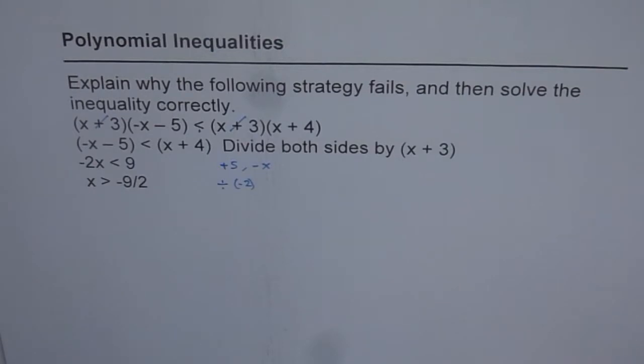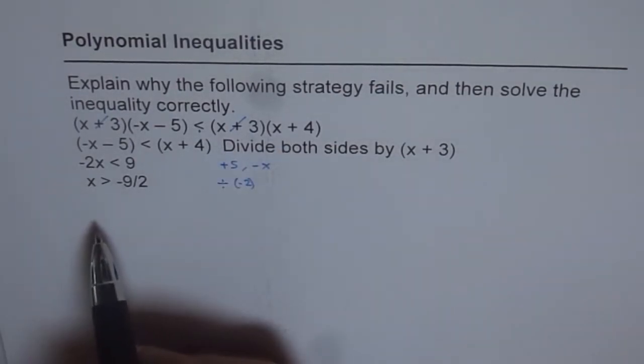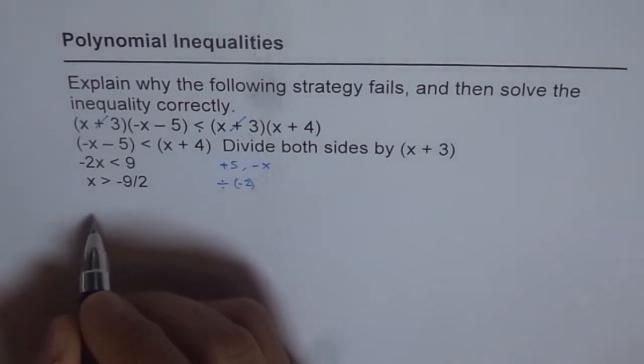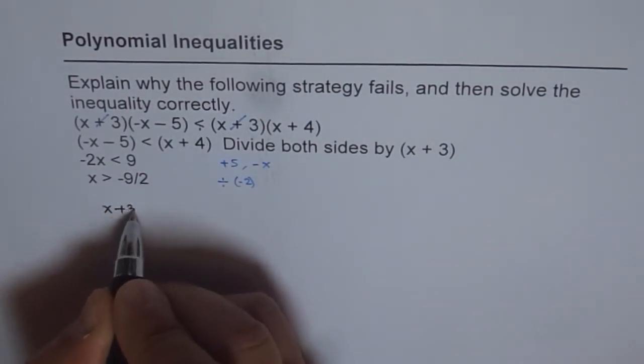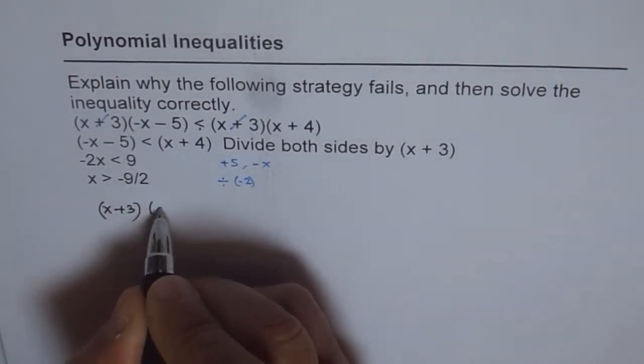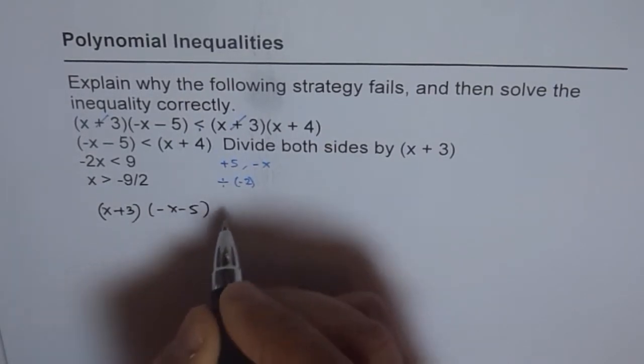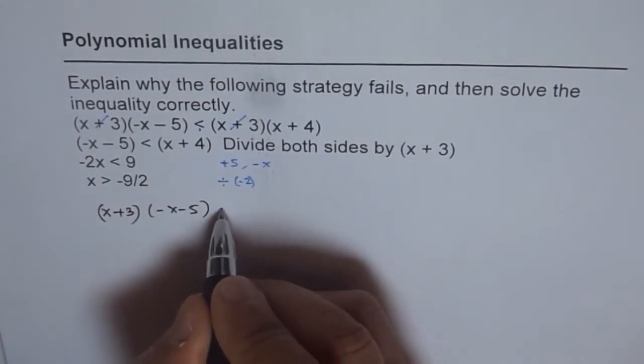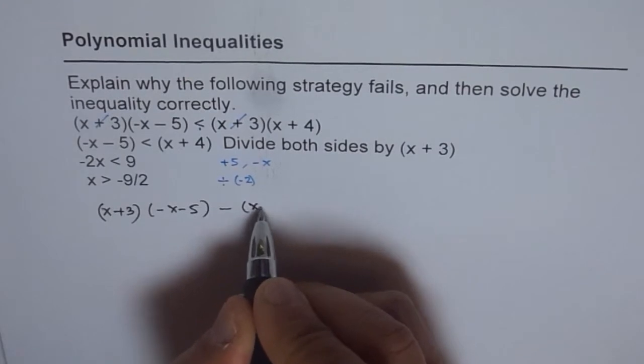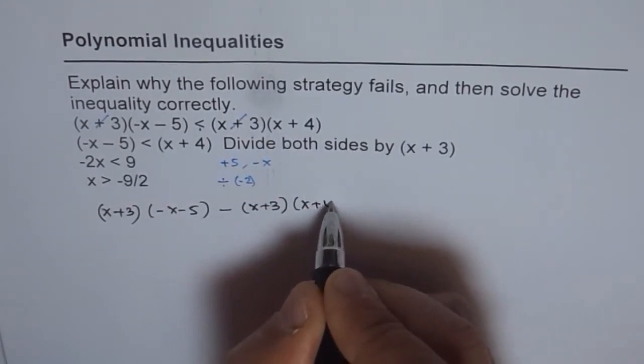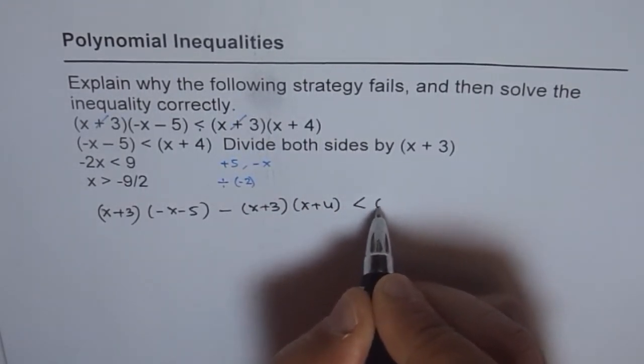So the idea is, whenever you solve for inequalities, we try to bring them all together to one side and then solve for inequalities. So to solve this inequality, what we will do is x plus 3 times minus x minus 5 and we will bring it to the left side, the whole expression, which is x plus 3 times x plus 4 less than 0.